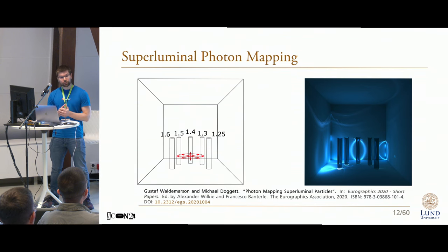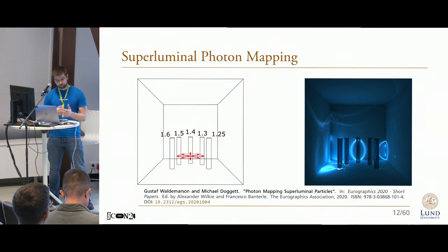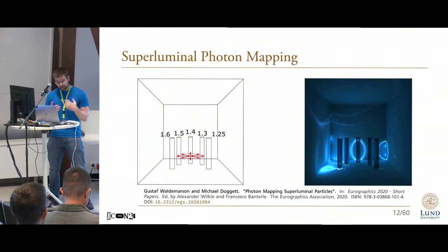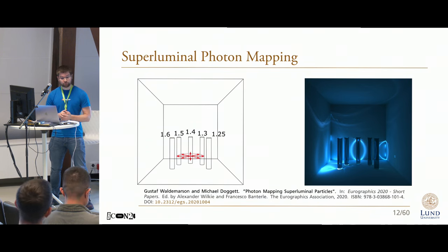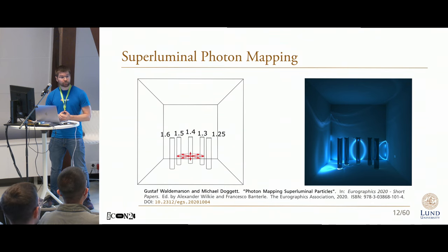This phenomenon depends quite a lot on the density of the material that the particle passes through. So to see how that would affect things, we created another scene with rods of varying index of refraction, giving us a rendering that looks something like this. And this and a few other things we wrote up in a paper. So if you're interested, you can find the details on my personal webpage, along with the code that I used to create these.